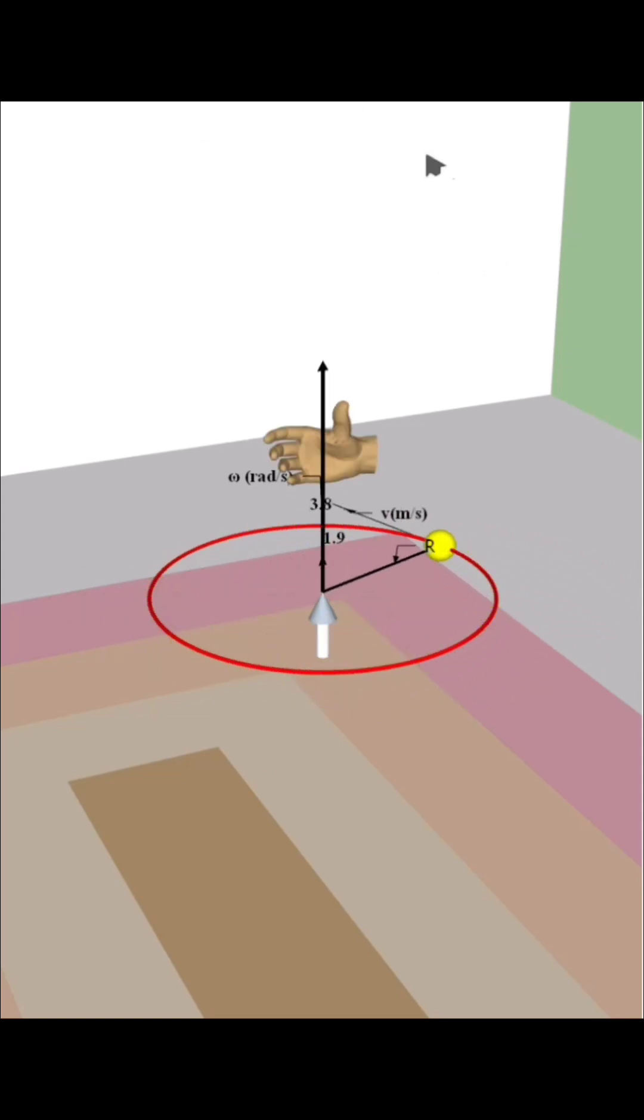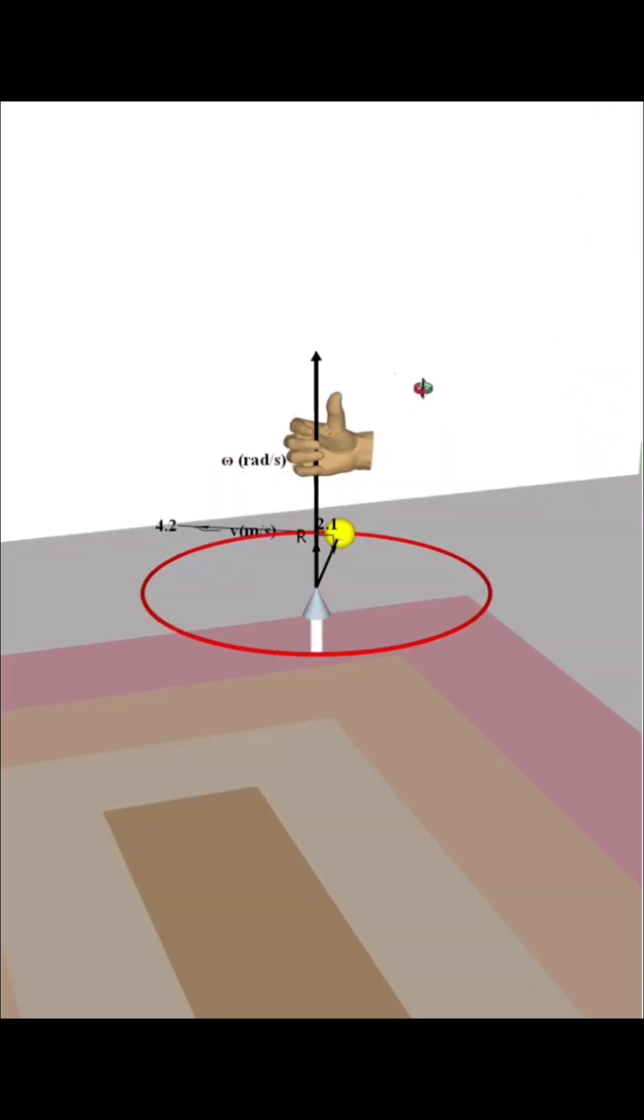Hold the axis of rotation with your hand and curl the fingers around the rotation of the object. The outstretched thumb gives the direction of angular velocity.